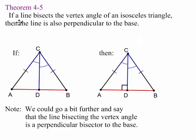Theorem 4-5. If a line bisects the vertex angle of an isosceles triangle, then the line is also perpendicular to the base. So this blue line, CD, or line segment, is bisecting this angle, this vertex angle here. We know it's the vertex angle because this leg and this leg are congruent. This is the vertex angle. So this rule is now saying that that angle bisector is perpendicular to the base. It's also a perpendicular bisector, but our book is not saying that. So, oh well. Let's keep going.